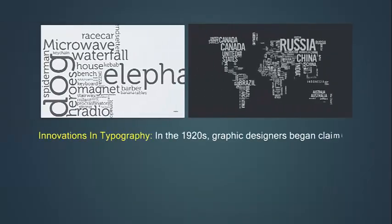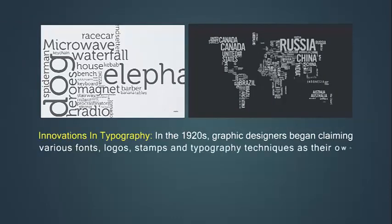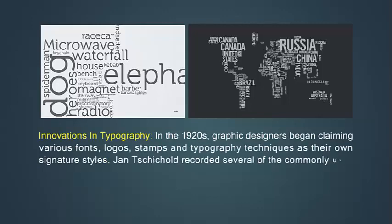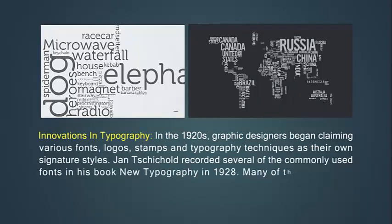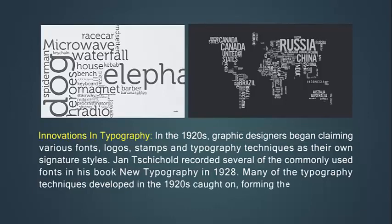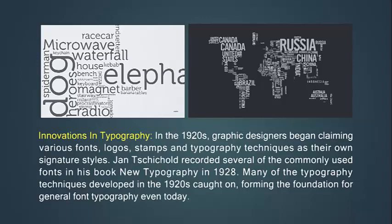In the 1920s, graphic designers began claiming various fonts, logos, stamps, and typographic techniques as their own signature styles. Jan Tschichold recorded several of the commonly used fonts in his book New Typography in 1928. Many of the typography techniques developed in the 1920s caught on, forming the foundation for general font typography even today.